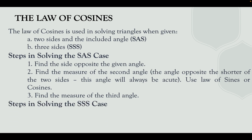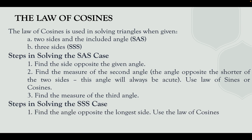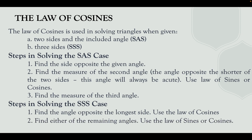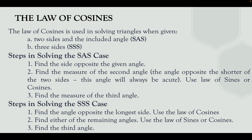Step three: find the measure of the third angle using the sum of all interior angles of the triangle. Steps in solving the side-side-side case: first, find the angle opposite to the longest side using the Law of Cosines. Second, find either of the remaining angles using the Law of Sines or Cosines. Third, find the third angle.